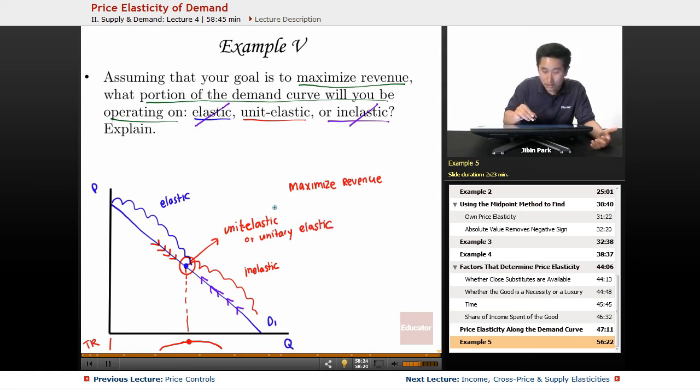So you're maximizing revenue at that portion of the demand curve. The explanation is that you maximize revenue at the unit elastic point because the left-hand side of the demand curve is going to be elastic, and the right-hand side of the demand curve is going to be inelastic. So that's why it is the unit elastic point. Thank you for watching.